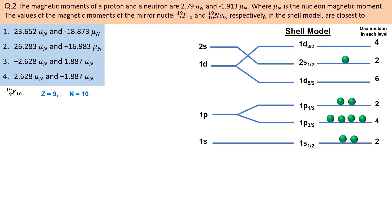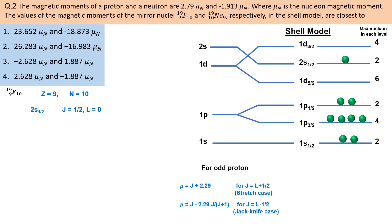Is new configuration ke according fluorine ka angular momentum 1/2 hoga. Magnetic moment ki baat karein to odd protons ki vajah se magnetic moment in do formulon se diya jaata hai. Chuki last proton S orbit mein hai, jiske liye orbital angular momentum 0 hota hai, isliye stretch case consider karte hain. J ki value ko is relation mein put karne par fluorine ka magnetic moment 2.79 μN milta hai.